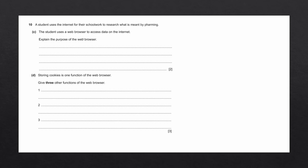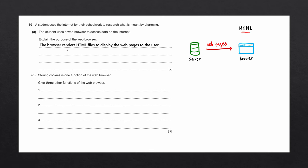Question C asks to explain the purpose of the web browser. When a browser connects to a website, the server sends web pages (normally in HTML format) to the browser, which renders them to display the pages to the user. Question D asks for three other functions of the web browser besides storing cookies. First, the address bar allows searching for information using a search engine. Second, multiple tabs can be open for different websites at once. Third, the browser stores history so previously visited websites can be revisited.